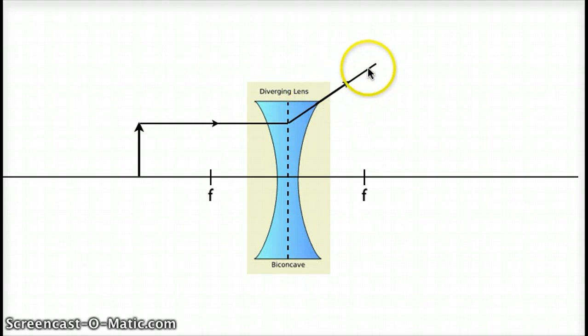And the path, the angle of this outgoing ray, is such that if I trace this line back as a straight line, it will connect to the incoming focal point. So there's our dashed line tracing back to the incoming focal point.